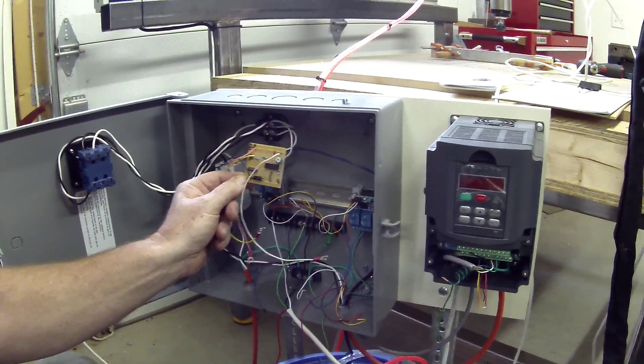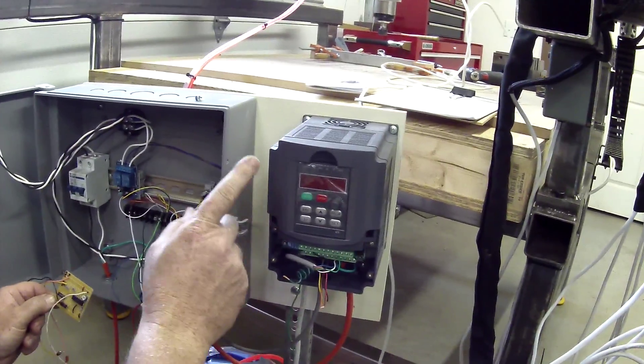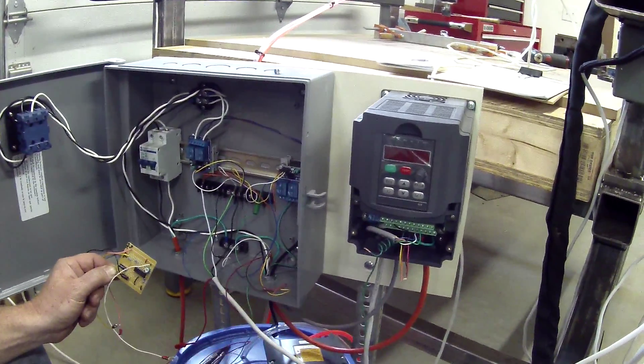That converts the signal coming from the control panel to a voltage, which the spindle controller interprets for spindle speed.